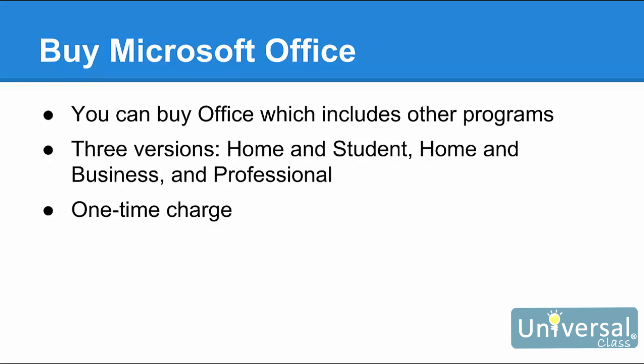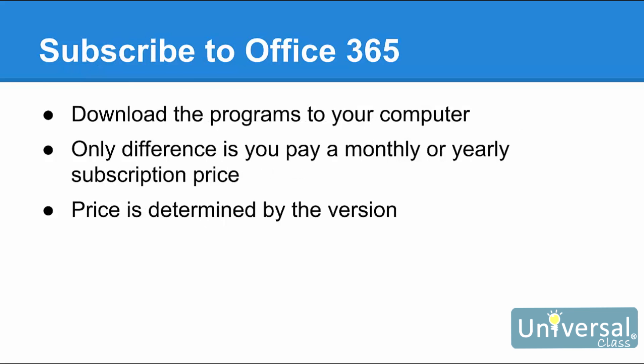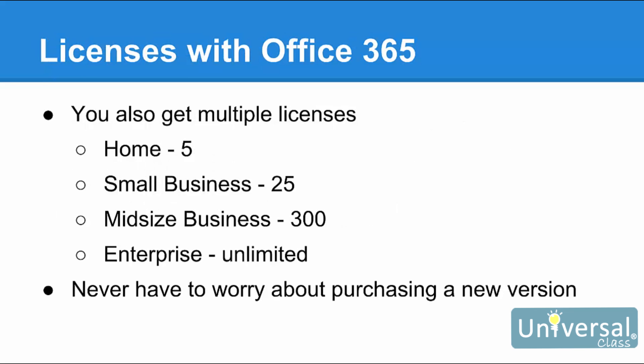You can buy Office directly from Microsoft or an approved retailer. With Office 365, you'll be able to download the Office programs to your computer just as if you had purchased them. The only difference is you will pay either a monthly or yearly subscription price in order to keep the program active and functional. The price of your subscription will be determined by the version that you want. On the Microsoft website, you can see the subscription prices for the Home and Student versions of Office 365 and what each includes. As part of Office 365, you'll also be given multiple licenses, giving you the ability to install the software on other computers. For the Home version, you get up to five licenses. The Small Business version comes with licenses for up to 25 users. The Midsize Business version provides for up to 300 users.